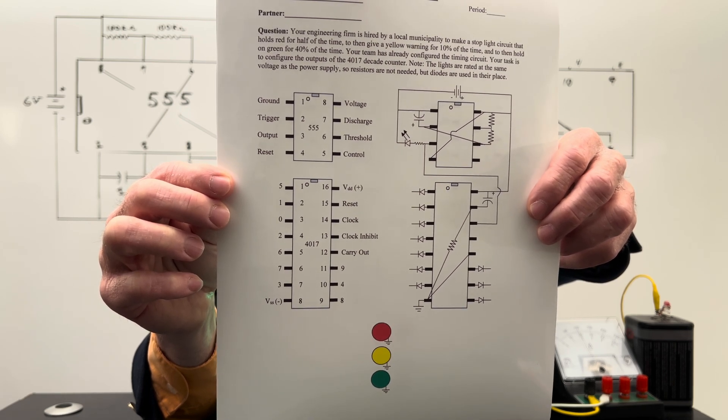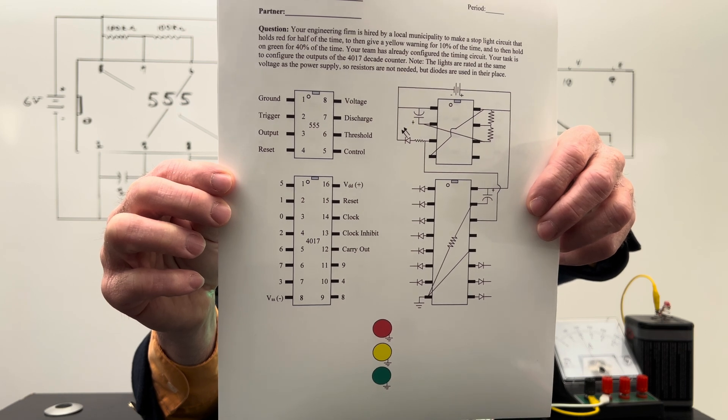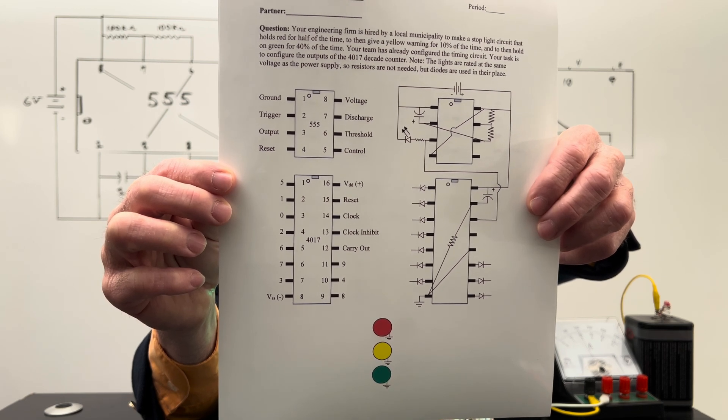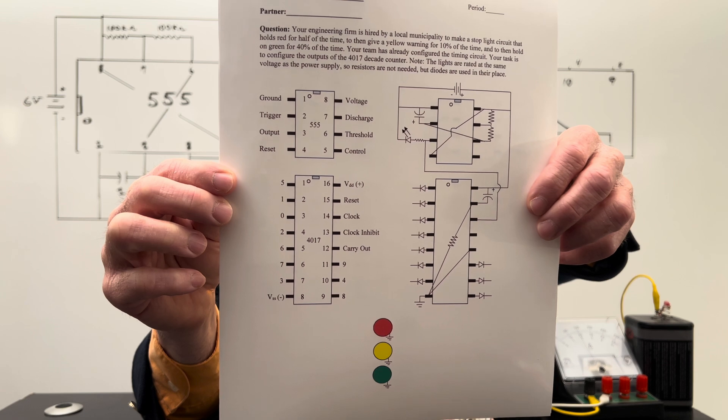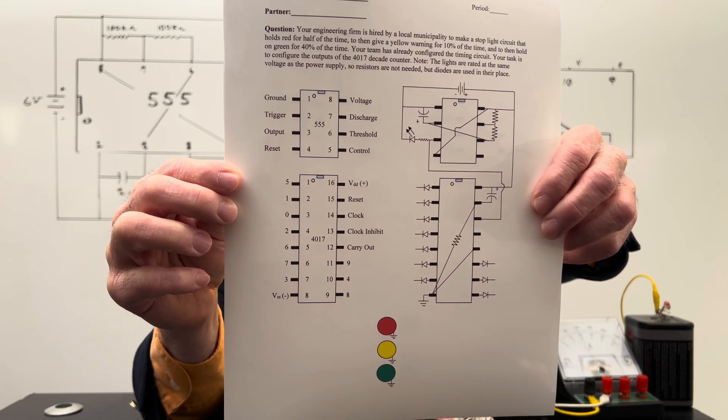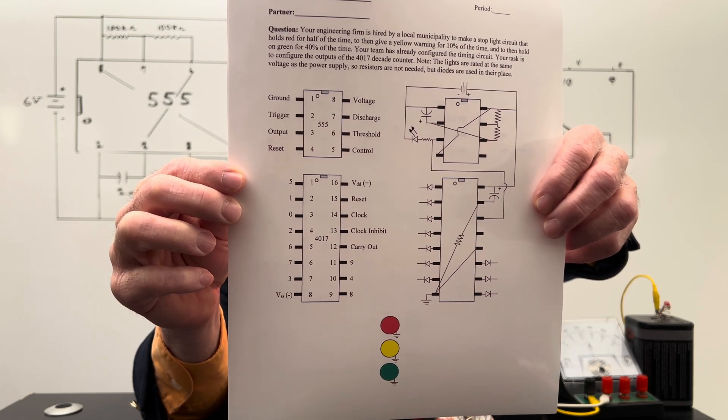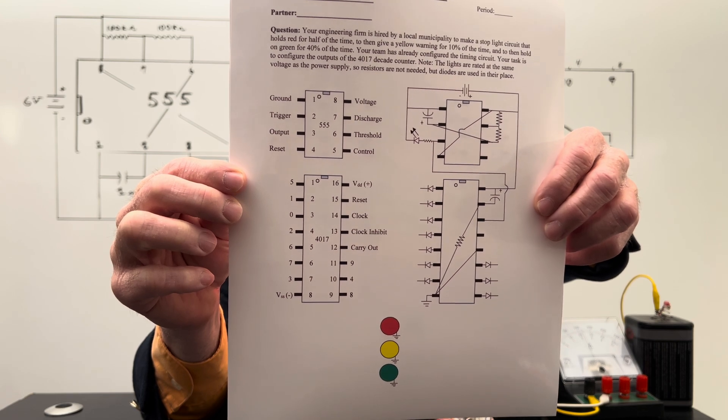Your team has already configured the timing circuit. Your task is to configure the outputs of a 4017 decade counter. Note the lights are rated at the same voltage as the power supply, so resistors are not needed, but diodes are used in their place.